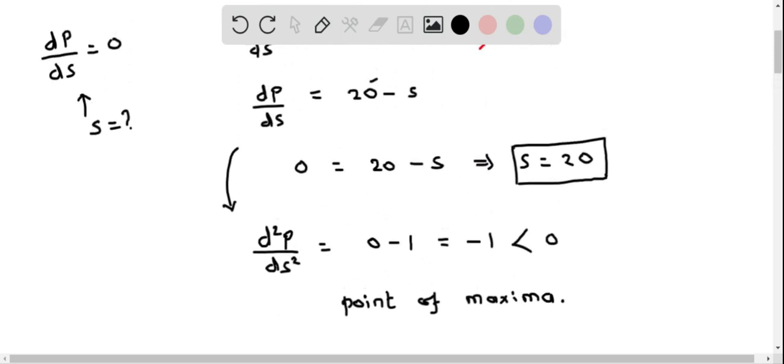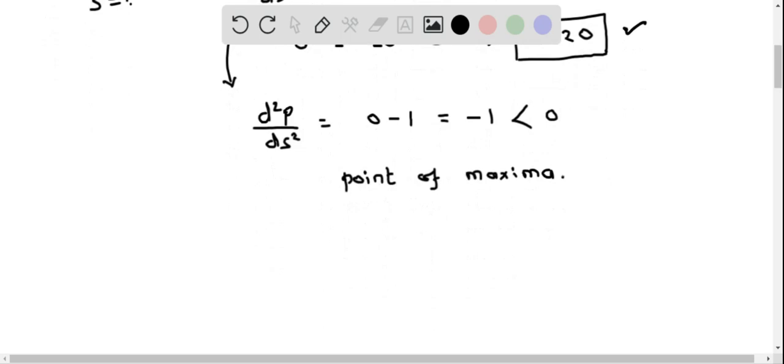So we have verified that at S equals 20, the profit is maximum. Therefore, at S equals 20, that is in hundreds of dollars, the profit is maximum.